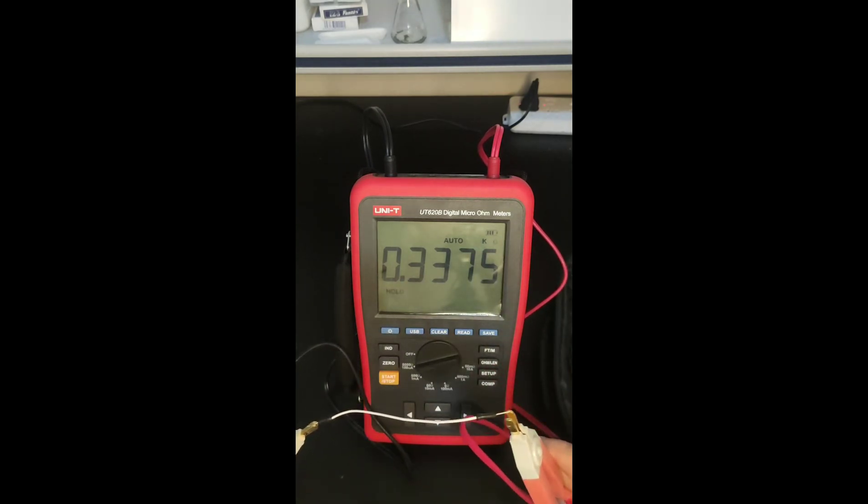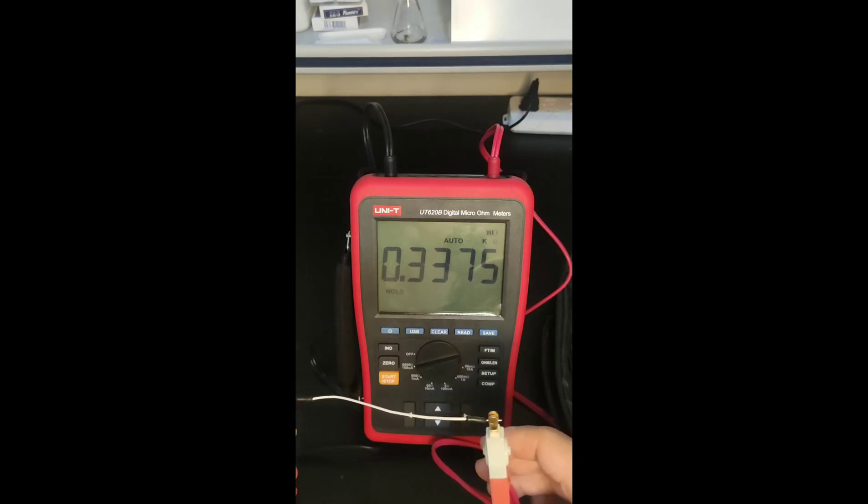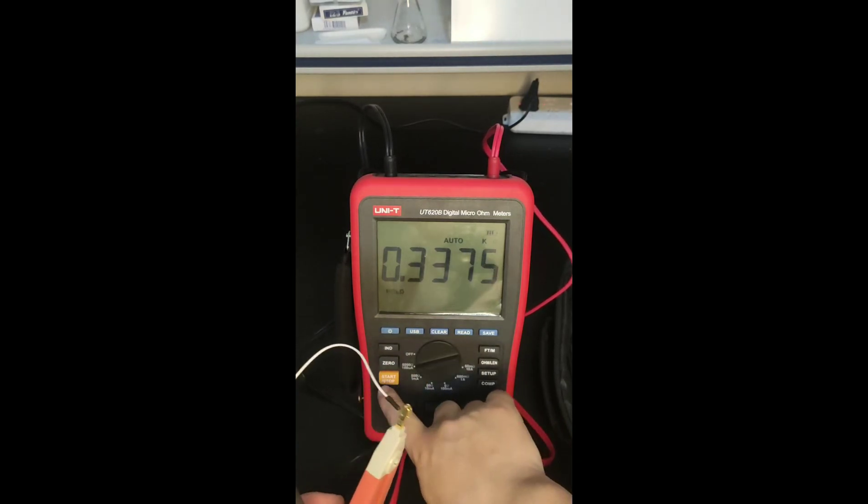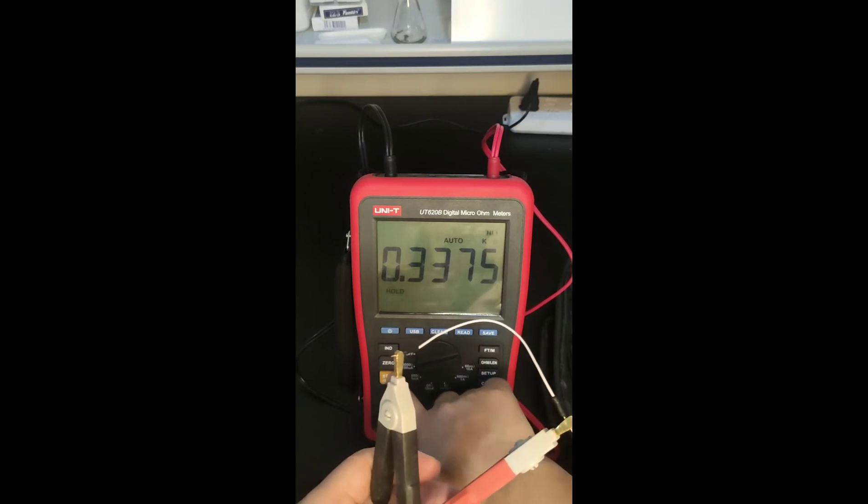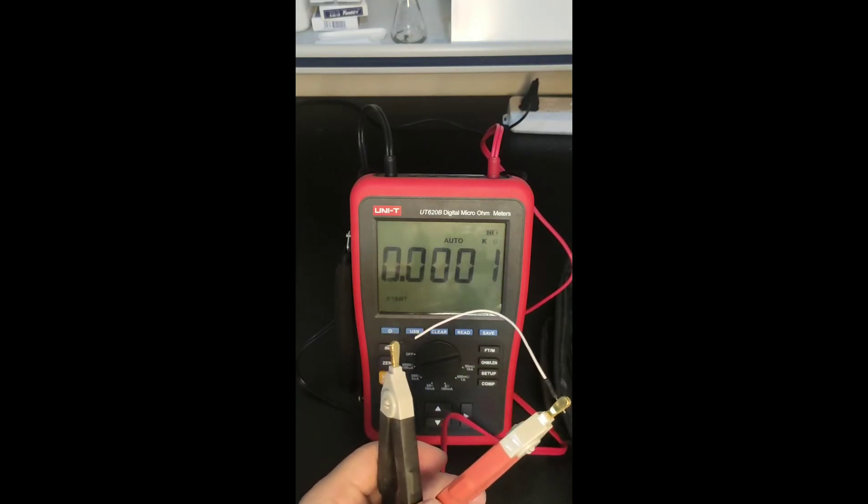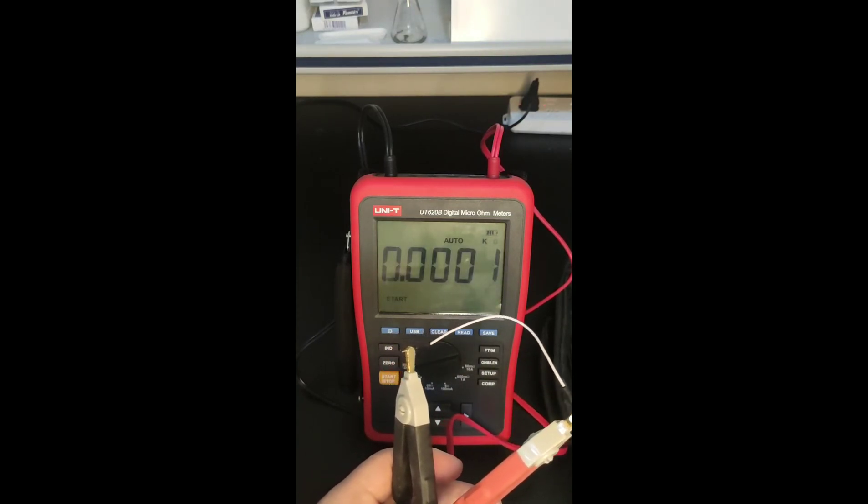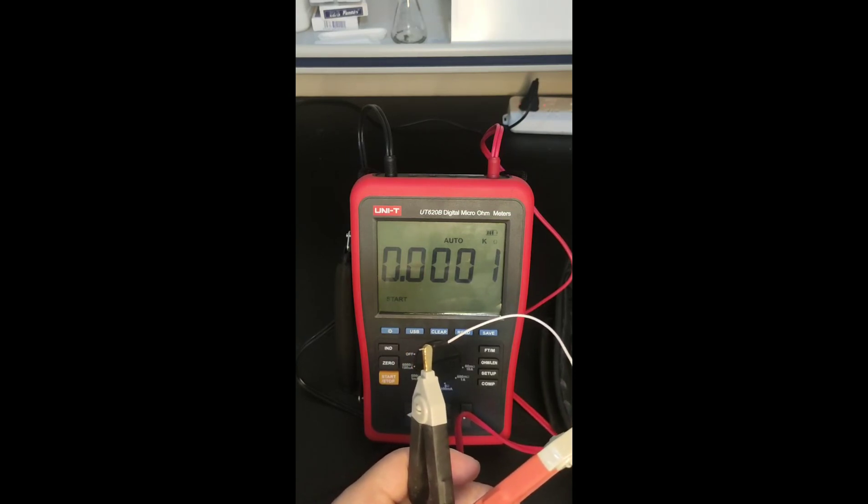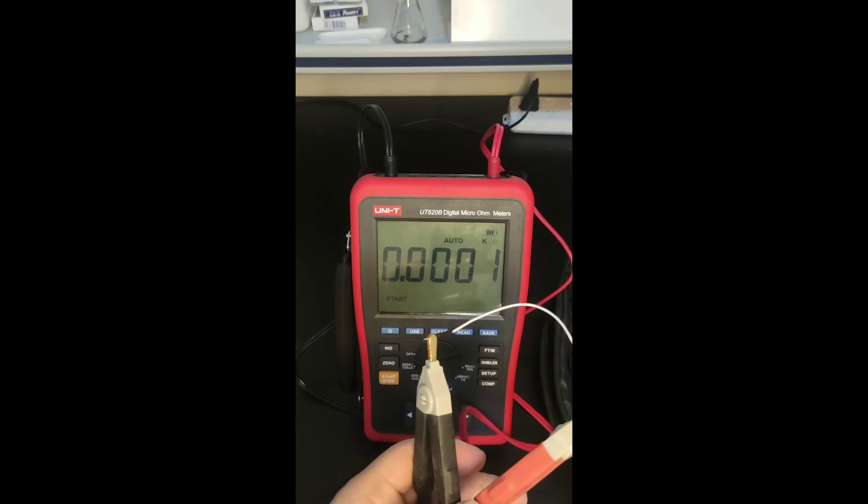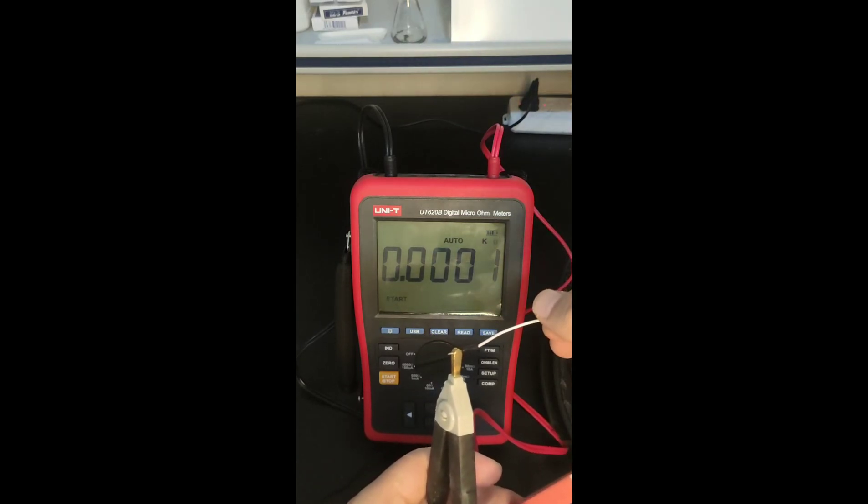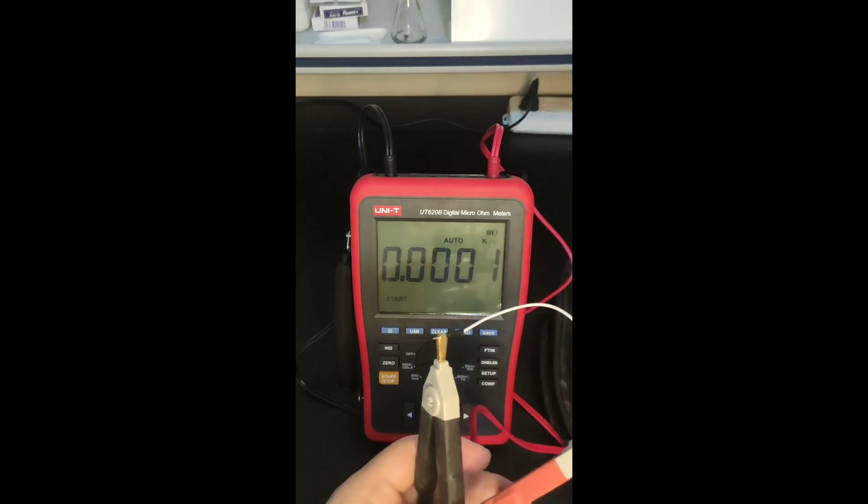Alright. We start. You see? The resistance is just 0.0001 kilo ohm. That is 0.1 ohm. Very low. So basically the machine is very sensitive. And give the I think is very accurate result.